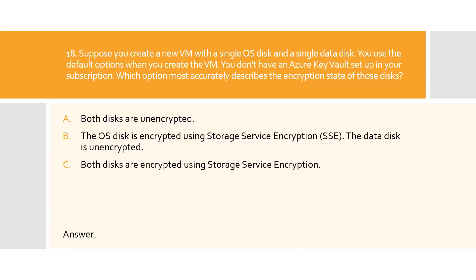Question eighteen: Suppose you create a new virtual machine with a single OS disk and a single data disk using the default options, and you don't have an Azure Key Vault set up in your subscription. Which option most accurately describes the encryption state of those disks? A) Both disks are unencrypted, B) The OS disk is encrypted using Storage Service Encryption and the data disk is unencrypted, C) Both disks are encrypted using Storage Service Encryption. Option C is the right answer.